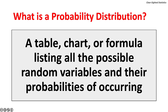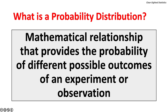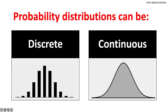What is a probability distribution? A probability distribution is a table, chart, or formula listing all possible random variables and their probabilities of occurring. A probability distribution is a mathematical relationship that provides the probability of different possible outcomes of an experiment or observation. Probability distributions can be discrete as shown on the left and continuous as shown on the right. Both of these distributions are symmetrical.